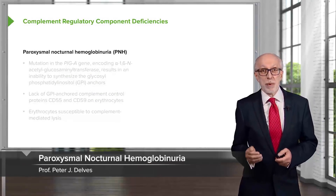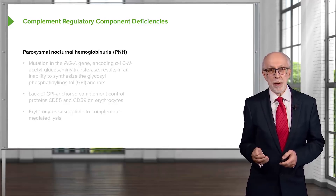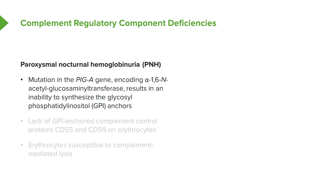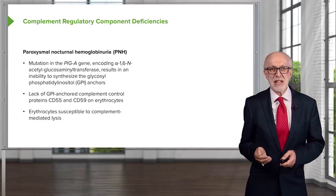One interesting complement regulatory component deficiency is paroxysmal nocturnal hemoglobinuria, PNH. In this disease, there is a mutation in the PIG-A gene, which encodes an alpha-1,6-N-acetyl-glucosaminyl transferase. This results in an inability to synthesize the glycosylphosphatidylinositol, or GPI, anchors. A lack of these GPI anchors means that complement control proteins CD55 and CD59 are absent from the surface of erythrocytes, making them susceptible to complement-mediated lysis.